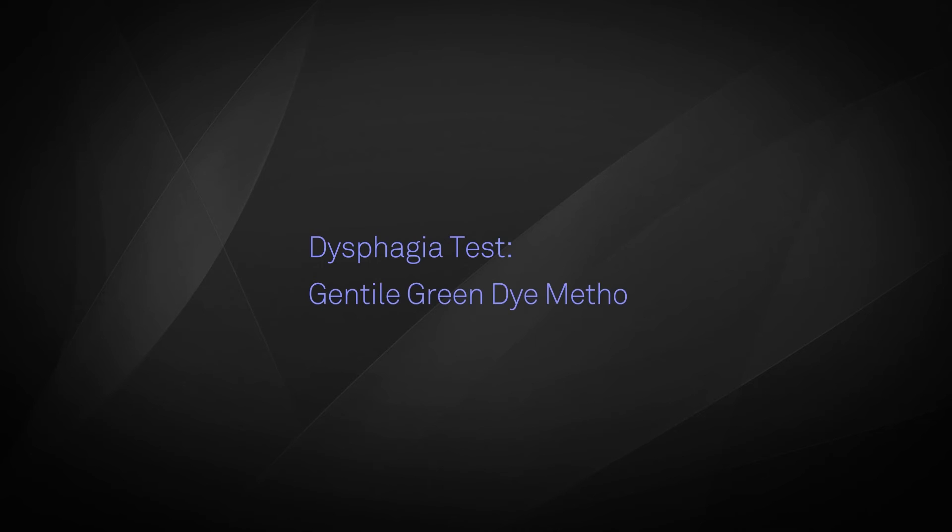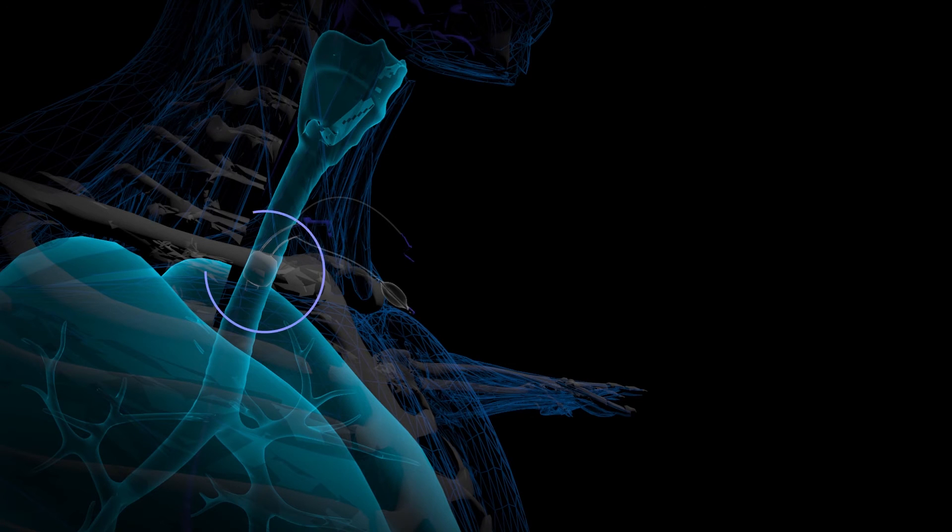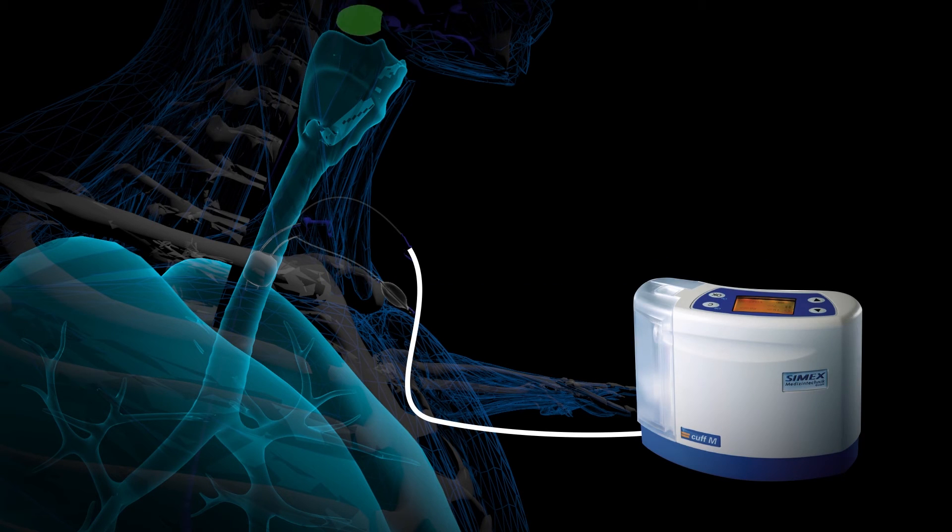Using the new novel technique called the Gentile green dye method, speech pathologists can now leave the balloon cuff in place, protecting the lungs, and safely place a drop of green dye at the back of the mouth of the patient or simply feed them applesauce with green dye.